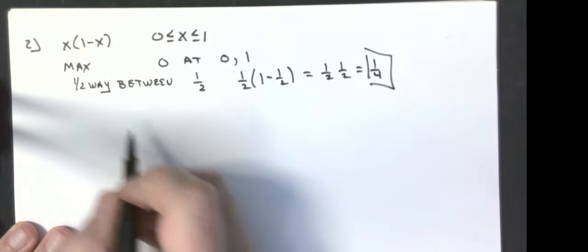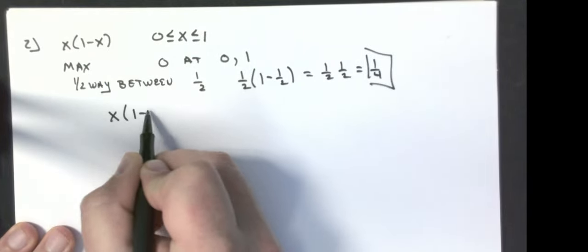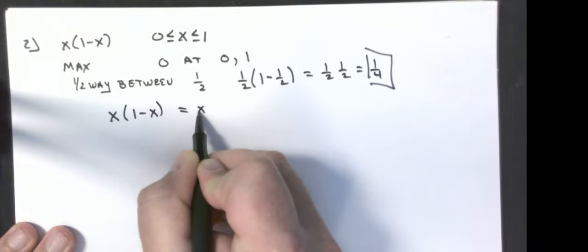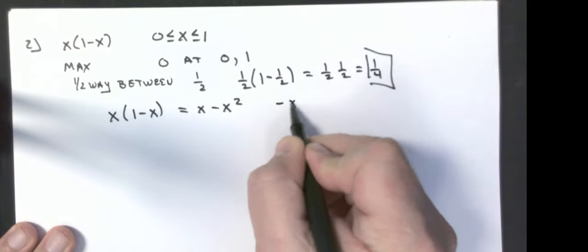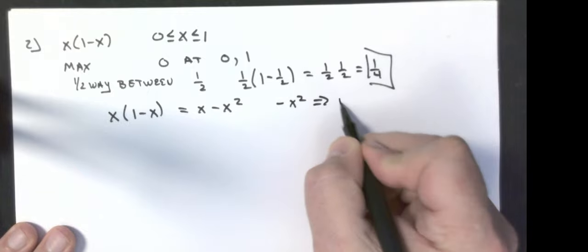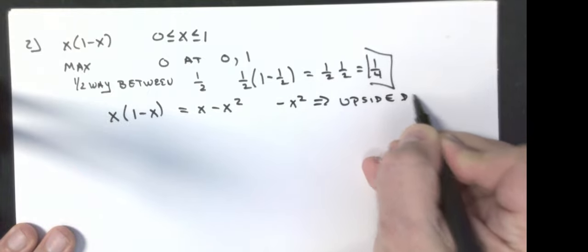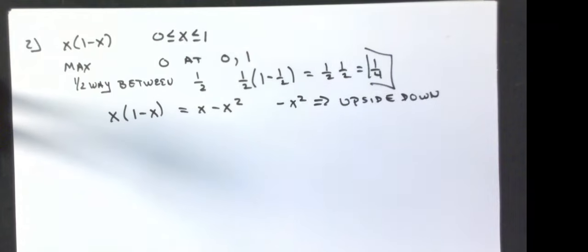Explain how you know the value of x is, in fact, a maximum and not a minimum. Well, let's take this and multiply it out. That's going to give me x minus x squared. And I have a negative x squared. Therefore, it's upside down. That one took about a minute. So first one took 14, that one took a minute.